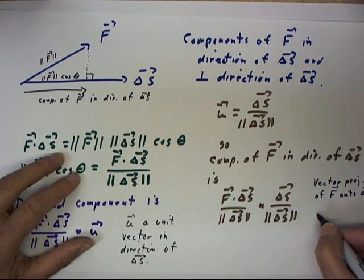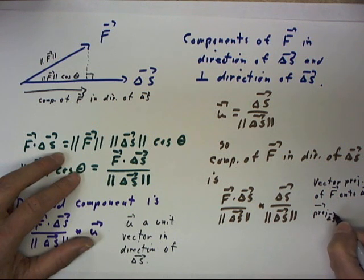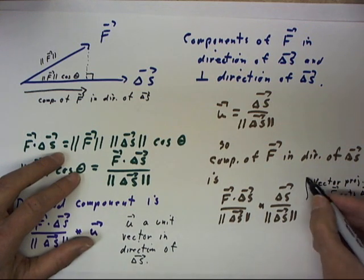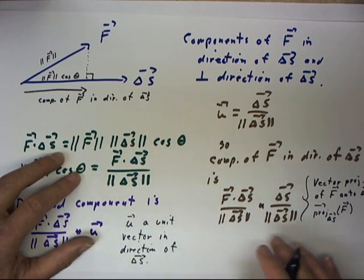And we write that as proj for projection sub delta s of f, projection onto delta s of f. That's what this vector tells us.